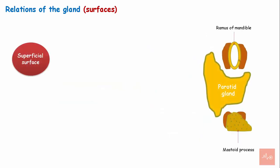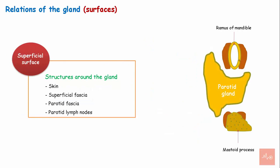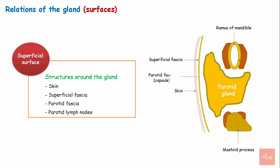The superficial surface is the largest of the four surfaces. The structures associated with the superficial surface are the skin, the superficial fascia containing the anterior branches of the greater auricular nerve, the parotid fascia, and the parotid lymph nodes.